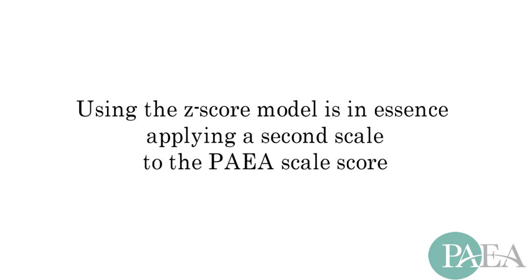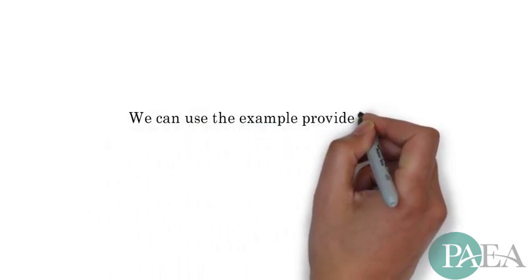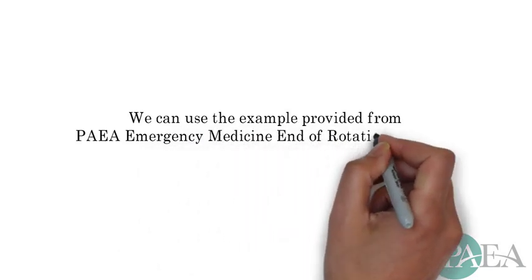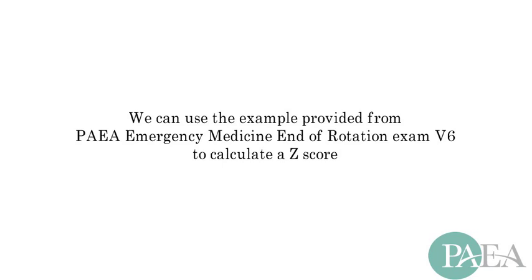We can use the example provided from the PAEA Emergency Medicine End of Rotation Exam Version 6, where the mean score is 406, the standard deviation is 21, and then calculate a Z-score for a hypothetical test score of 450.